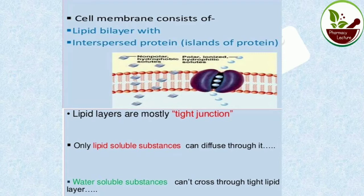Only lipid-soluble substances can pass through or diffuse through the tight junction of the cell membrane. Since the cell membrane is made up of lipid, lipid-soluble drugs easily pass through it. Water-soluble substances cannot cross this tight lipid layer because it is a tight junction. Lipid-soluble drugs are easily diffused or absorbed through it.